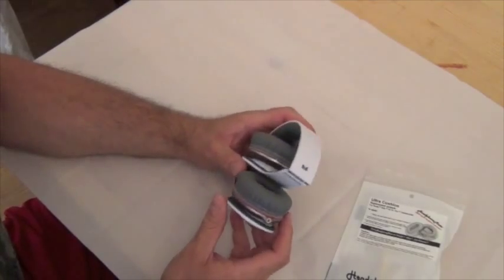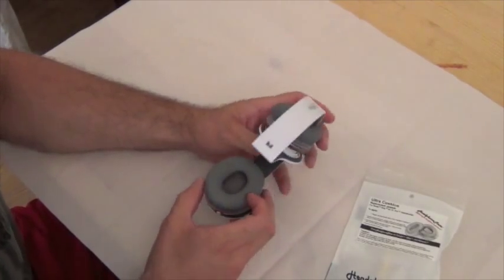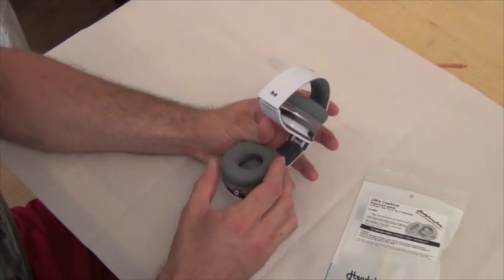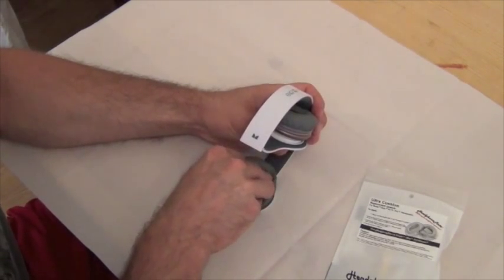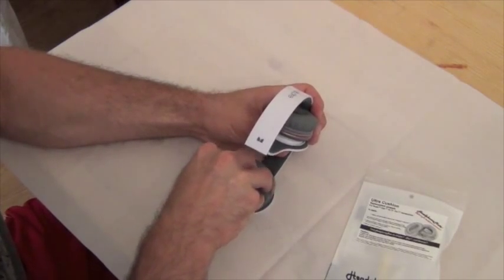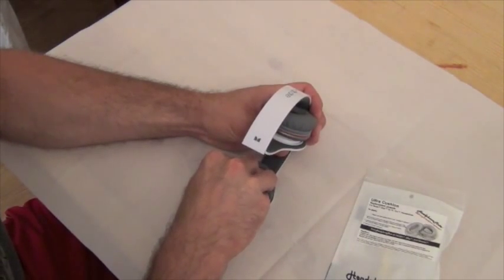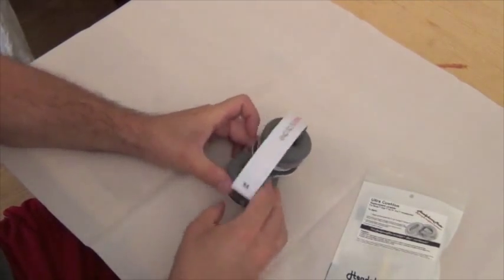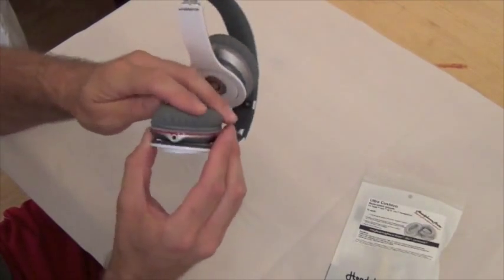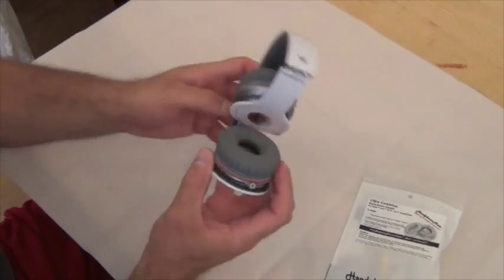Now sometimes what will happen is you'll get one or two in or you won't get all three in. And what you need to do is just slightly twist back. Apply the pressure. Slightly twist back. Get them slightly out. And then twist again around and in. And keep doing that until all three are in.